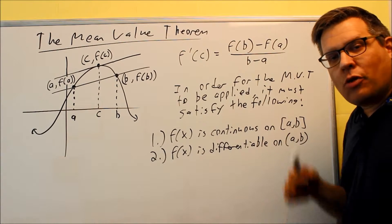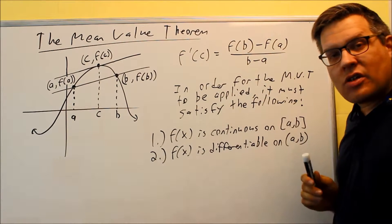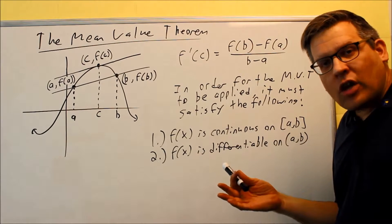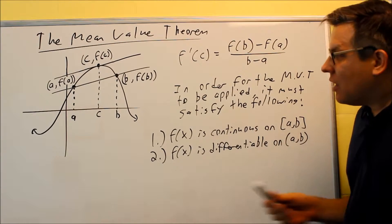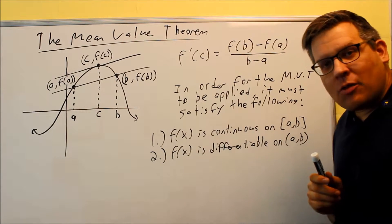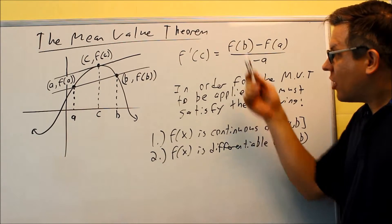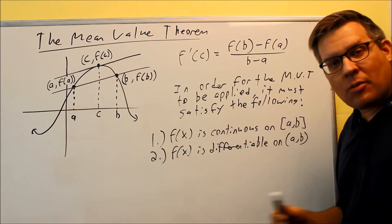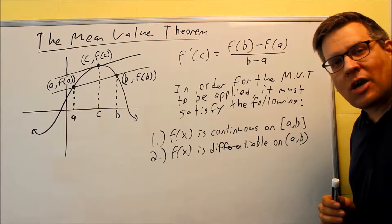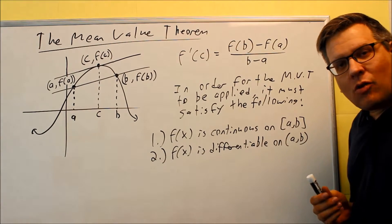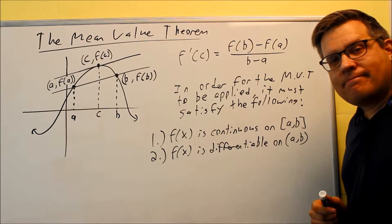So those are the two conditions that must be met. If these two conditions are met, then what Mean Value Theorem says is that this formula is guaranteed to give us at least one value of C, there might be more, but at least one value of C on the open interval from A to B in order for this equation to be satisfied. And we're actually going to be finding the C value in later problems in this section. But before we jump into that, let's first just take a look at a quick example just to make sure we understand if a Mean Value Theorem can be applied or not.